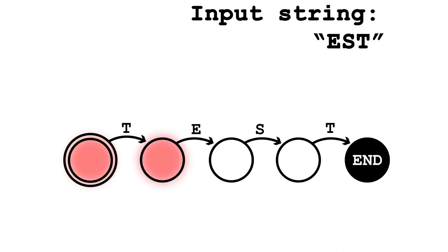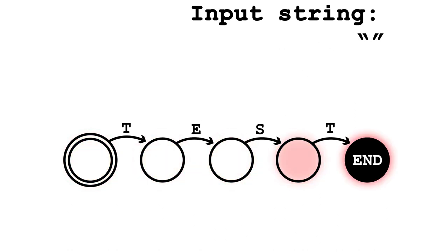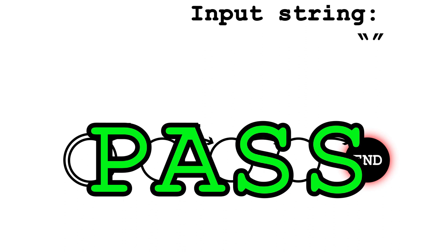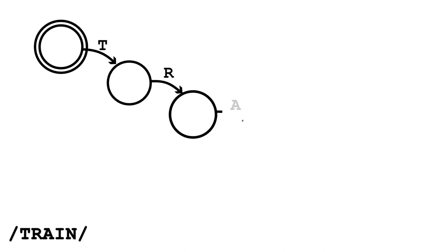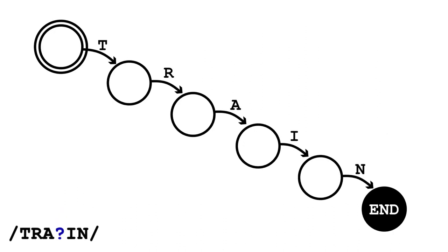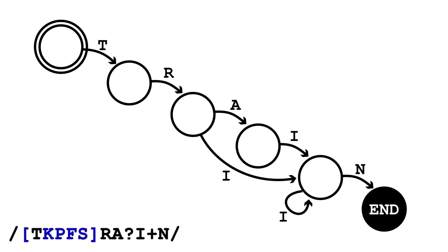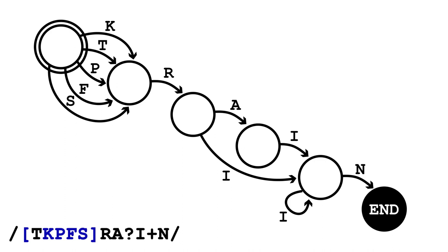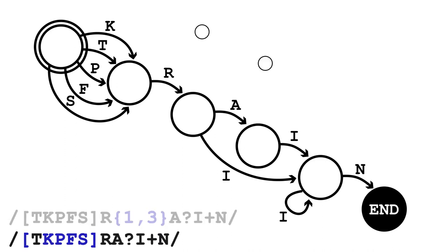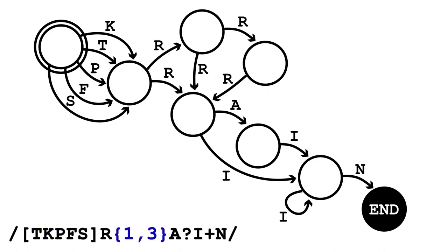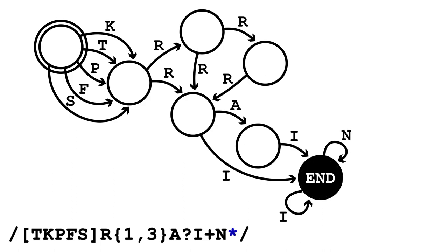If, once there are no more characters, the state is in a specified end state, the string matches. Here's a simple one that'll match the word 'train'. Now let's allow the 'a' to be optional, and also allow more than one 'i'. Now the first letter can be any devoiced consonant, and let's allow between one and three r's. Now also zero or more n's.